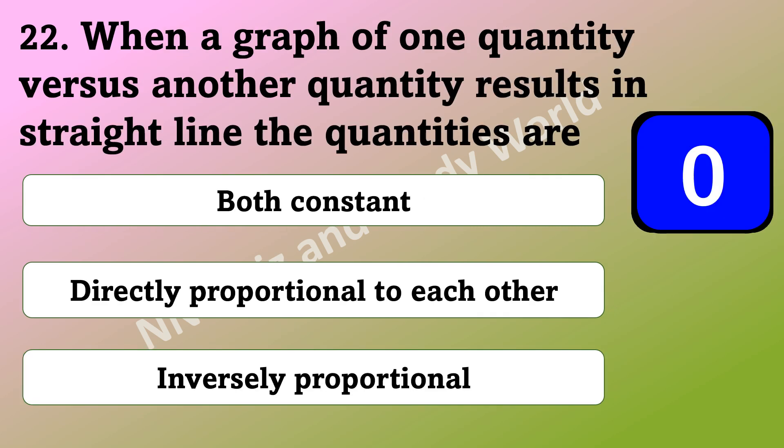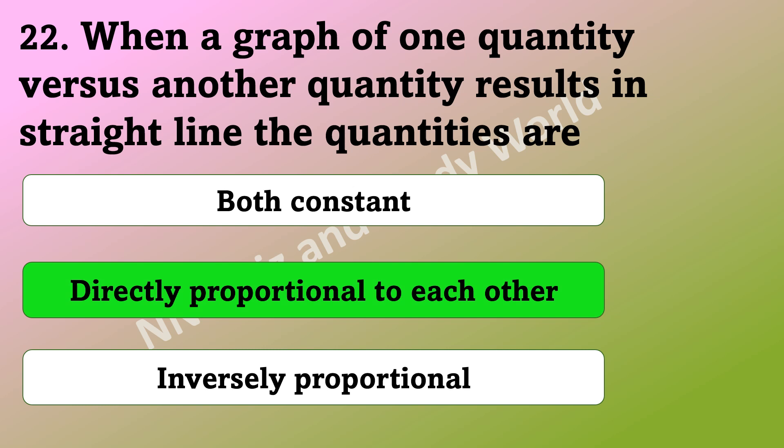When a graph of one quantity versus another quantity results in a straight line, then the quantities are both a constant, directly proportional to each other, or inversely proportional? The answer is directly proportional to each other.